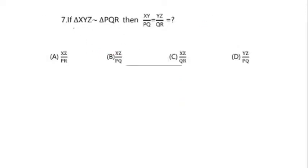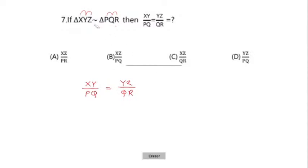Next question: if triangle XYZ is similar to triangle PQR, then XY divided by PQ equals YZ divided by QR equals what? Since the corresponding sides of similar triangles are in proportion, the third ratio must be XZ divided by PR. This is given at option A — XZ divided by PR is the answer.